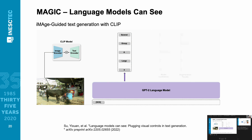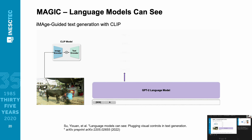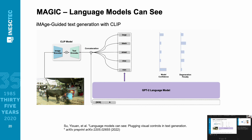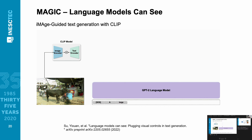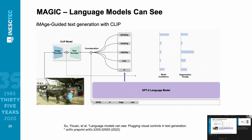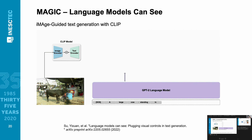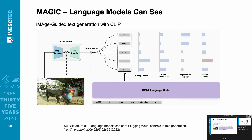One more interesting example is MAGIC — Magnet-guided image captioning with CLIP. The paper is called 'Language Models Can See.' It builds upon ZeroCap: they have a sentence and various options for the next word, and CLIP ranks which sentence is most similar to the image, with a few additional terms in the loss function. Again, this is completely zero-shot — you get your model, apply this ranking procedure, and train nothing.